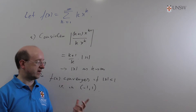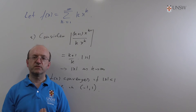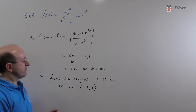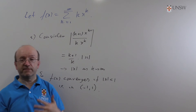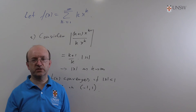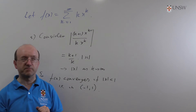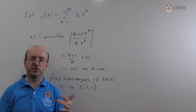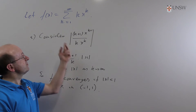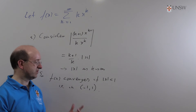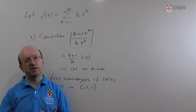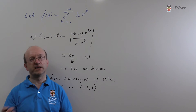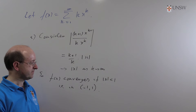Of course this leaves open the question of what happens at the end points. We only consider the end points of these intervals of convergence of power series in our higher first year courses. But in this case it's not difficult to see what happens. When x equals 1 we've got sigma k — 1 plus 2 plus 3 — it clearly doesn't converge. And when x is minus 1, the sum becomes minus 1 plus 2 minus 3 plus 4, which is not going to converge either. So in fact this series doesn't converge at either end point. Typically one end converges and one doesn't, but that's not guaranteed.